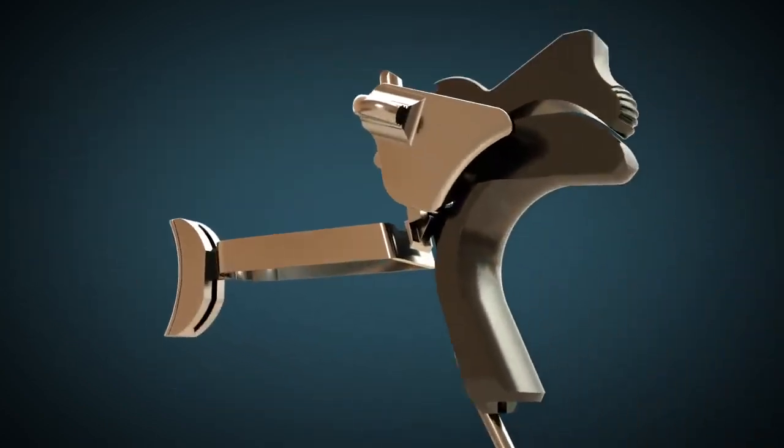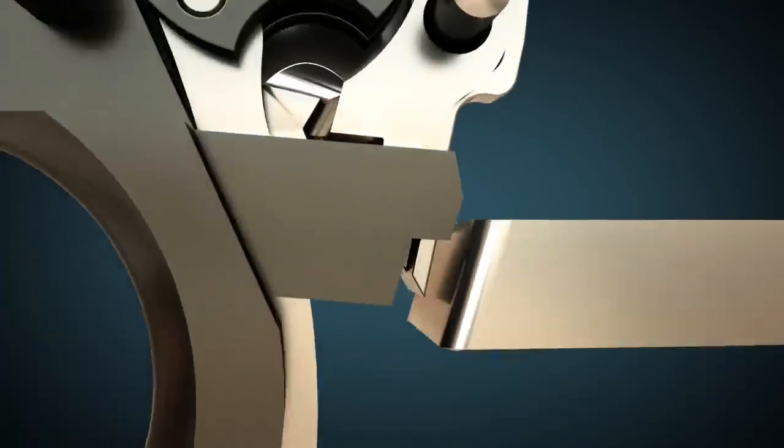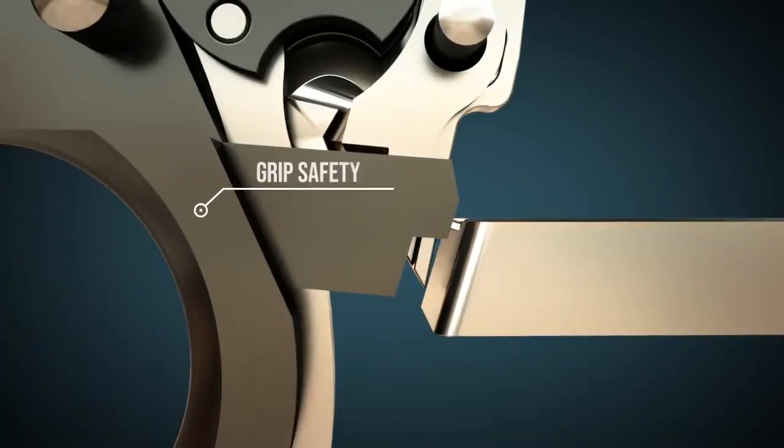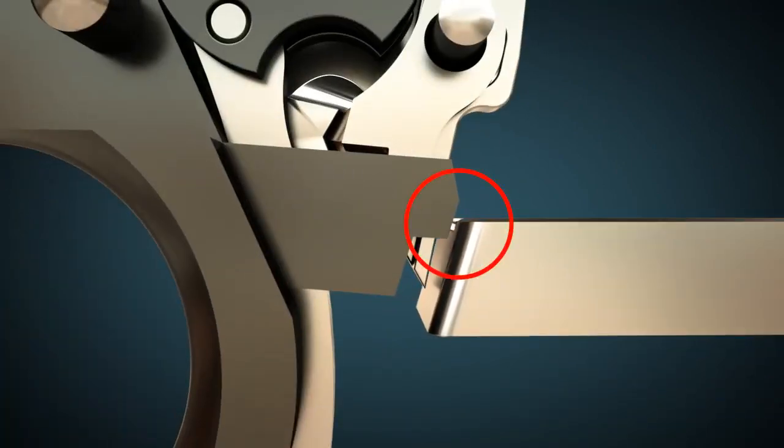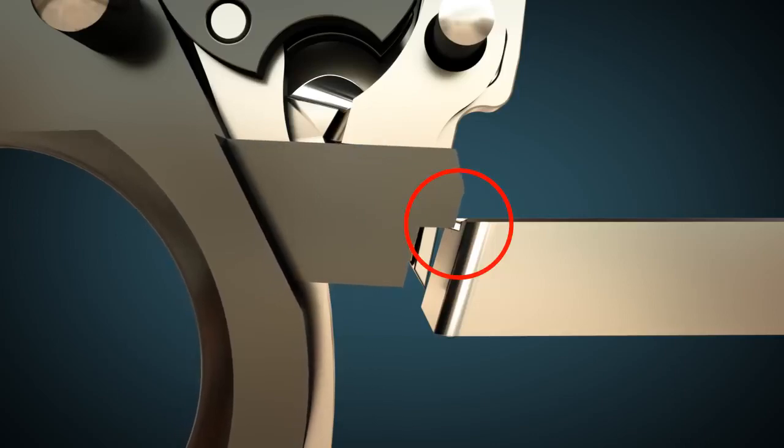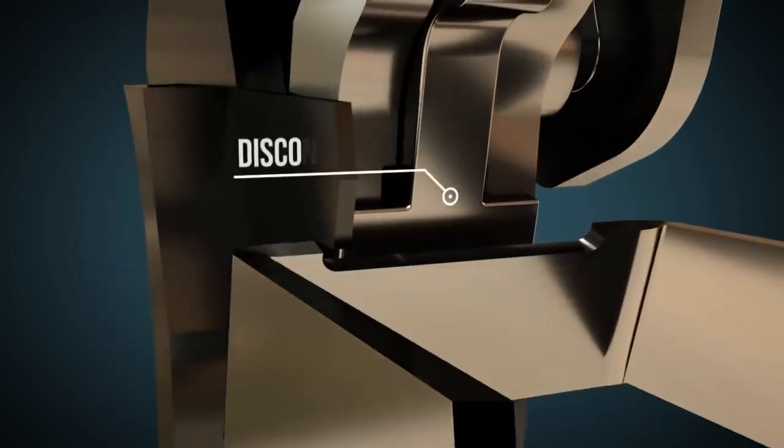The grip safety prevents the gun from firing. Only when the gun's grip is grasped by the hand, the trigger can move the disconnector and thus the sear.